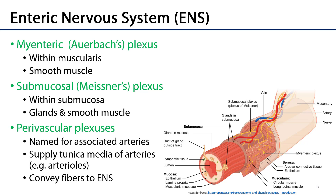The enteric nervous system consists of two plexuses. There is the myenteric plexus, also known as Auerbach's plexus, which is found between the layers of the muscularis. There are circular and longitudinal layers of the muscularis — the smooth muscle of the wall — and Auerbach's plexus is found within these layers. The myenteric plexus predominantly acts upon this layer by either contracting or relaxing the smooth muscle within.